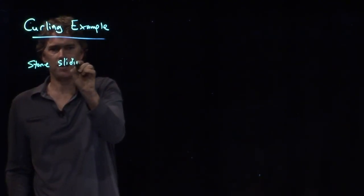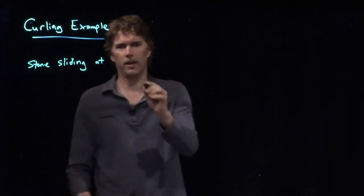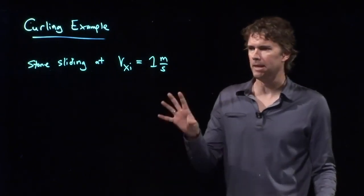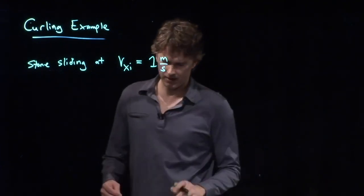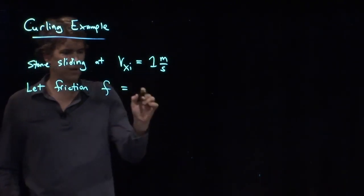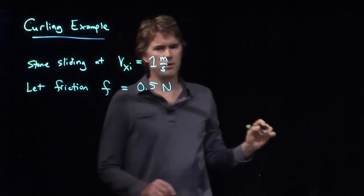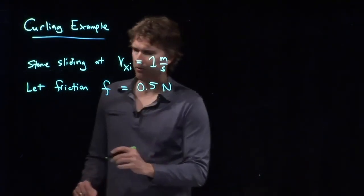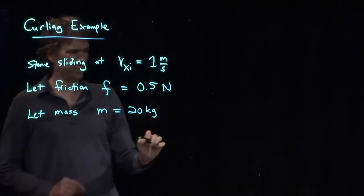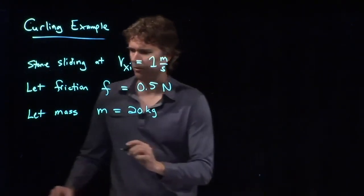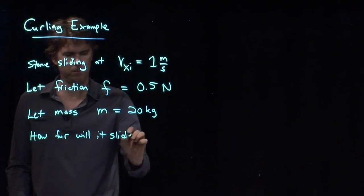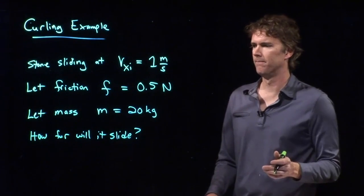Okay, so let's assume the following. Let's say that it is going to slide along at, I don't know, one meter per second. That might be even a little fast for one of those curling stones, but let's take that as our number. And let's say that our friction force is going to be 0.5 newtons. And we of course have a mass of the stone, which is about 20 kilograms. I think that's about right. All right, and let's ask the following question: how far will it slide?